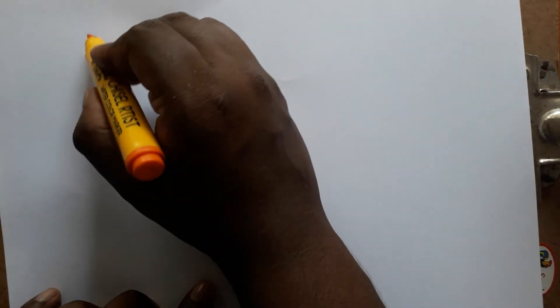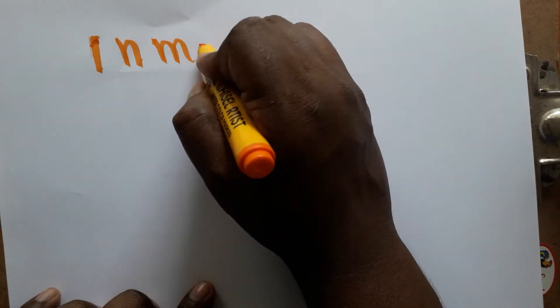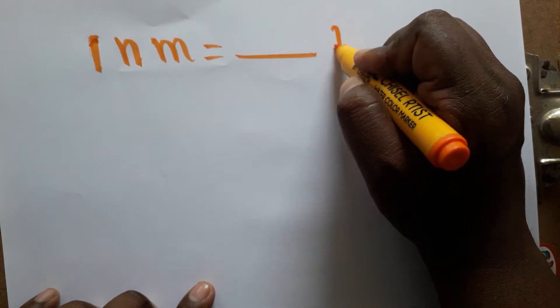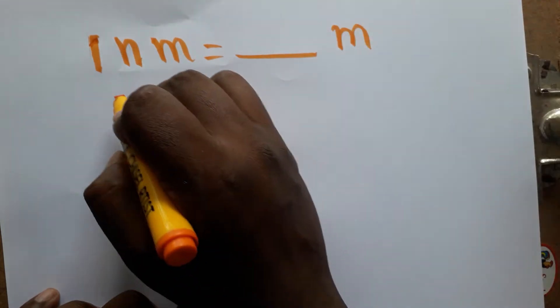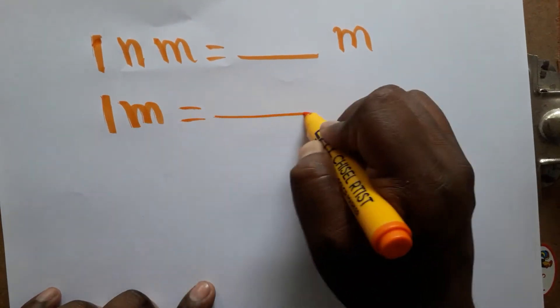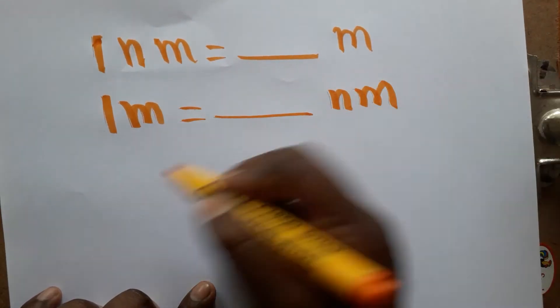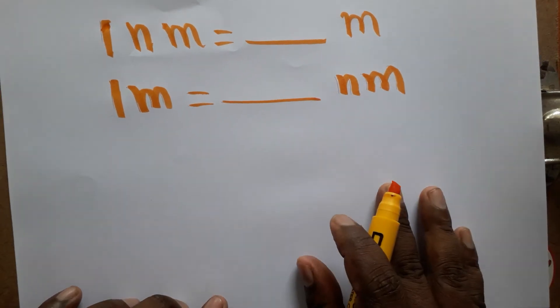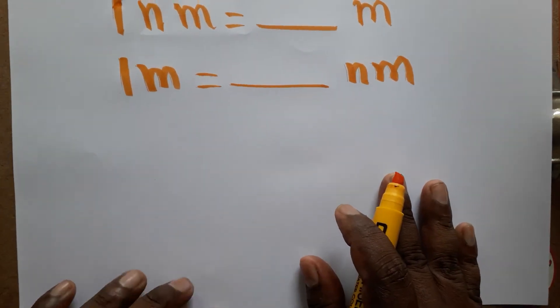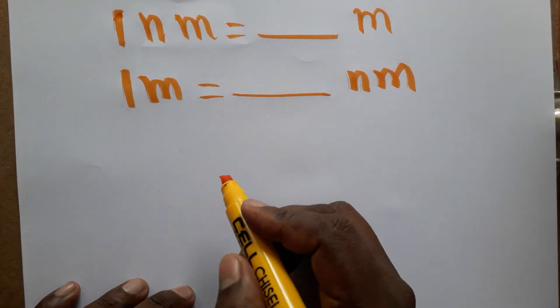Today we are going to learn: one nanometer is equal to how many meters, and one meter is equal to how many nanometers. These are the two things we are going to learn. First, we will see one meter is equal to how many nanometers.